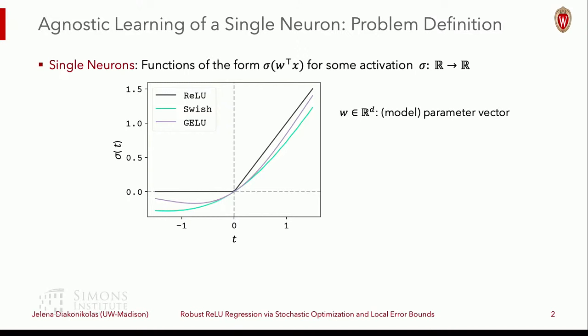This W here is our model parameter vector, and this here called sigma represents what is known as an activation function or a link function. And it can be a value that would be the most standard one, and actually I'll mostly talk about values, but the work actually results apply to much broader classes of activations, even including some non-monotone activations like Swish and GeLU.